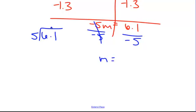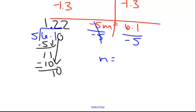So 5 goes into 6 once. 1 times 5 is 5. Subtract, we get 1. Bring down another 1. 5 goes into 11 twice. 2 times 5 is 10. Subtract, we get 1. Bring down a 0 this time. And 5 goes into 10 twice. So it's negative 1.22. Because, remember, positive divided by negative.